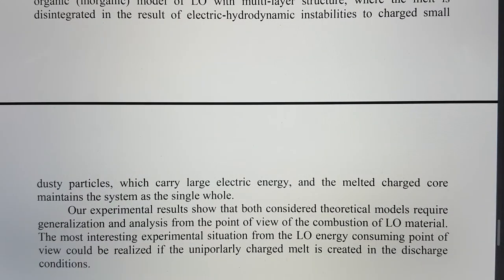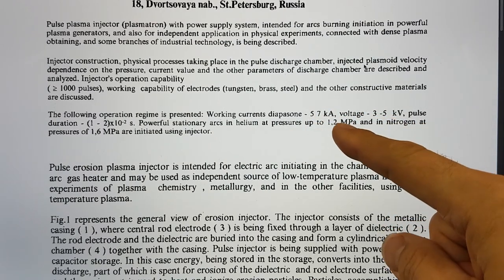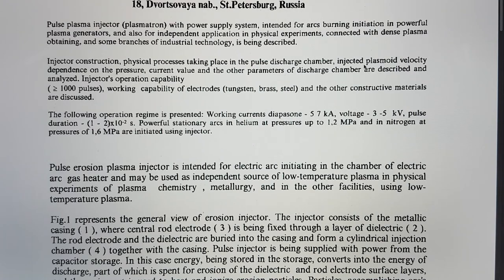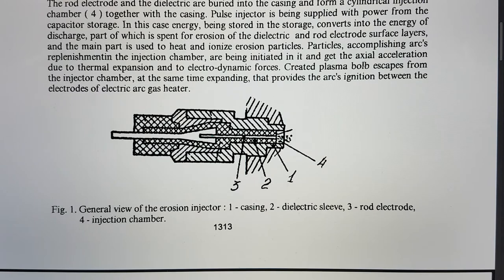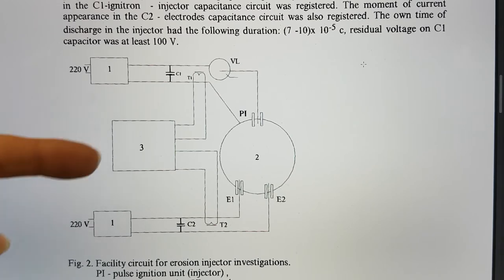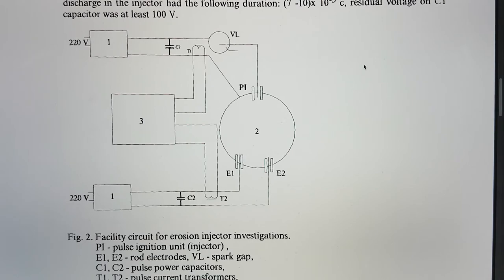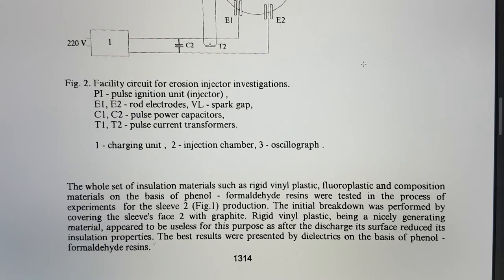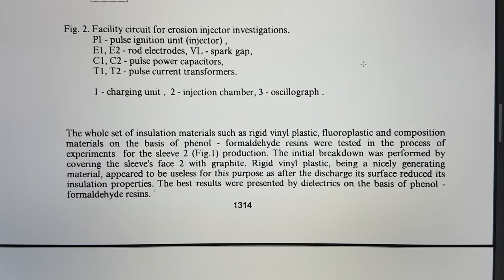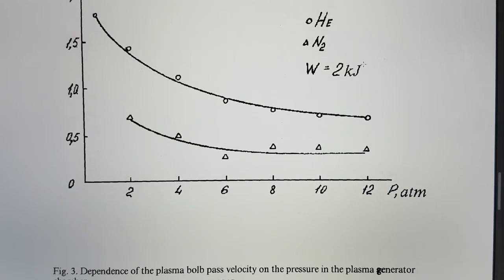There's another paper here: 'Pulse erosion plasma injector for discharge initiating in electric arc generator of plasma' — it is an erosion plasma generator. They had five to seven kiloamps and a voltage of three to five kilovolts, with a pulse of one to two times ten to the minus two seconds. You can see the suggested electrodes and the overall structure, plus a slightly different circuit. There's another spark gap visible — a lot of these things have spark gaps, and as we know, spark gaps create EVOs. You have this high dI/dt — a very large rate of change of current in a very small period of time. It also discusses kilometers per second based on pressure in the plasma generator table.